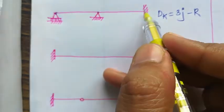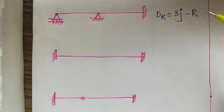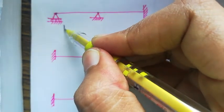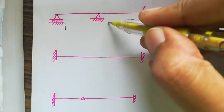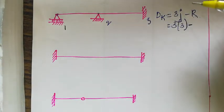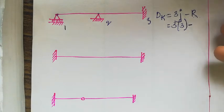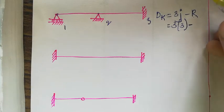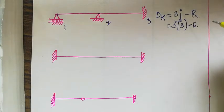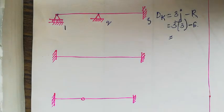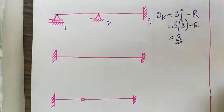Now let us solve for this member. How many joints do we have? One, two, and three — we have three joints. Next, reactions: one for a roller, two for a hinge, and three for a fixed support. So in total we have six reactions. Therefore the degree of freedom for this will be three.